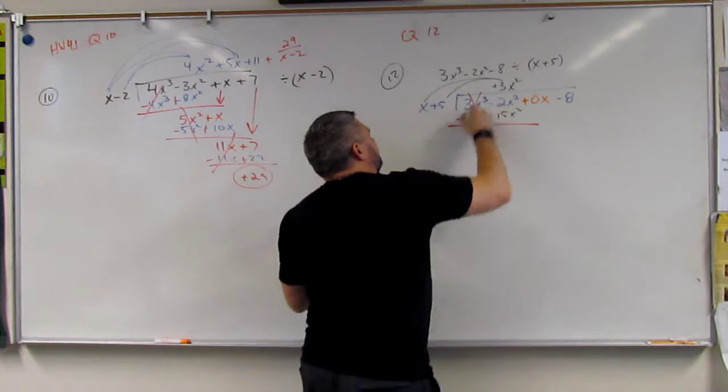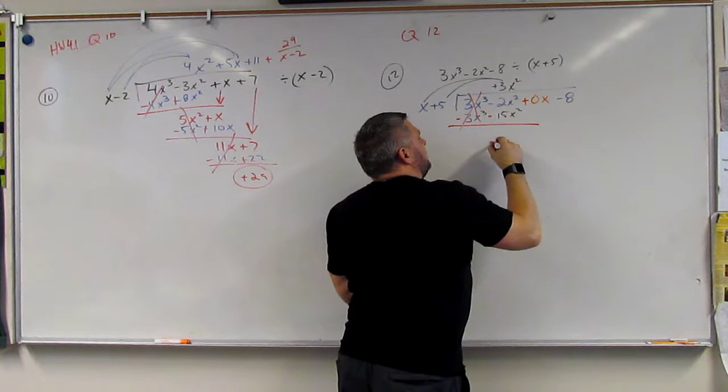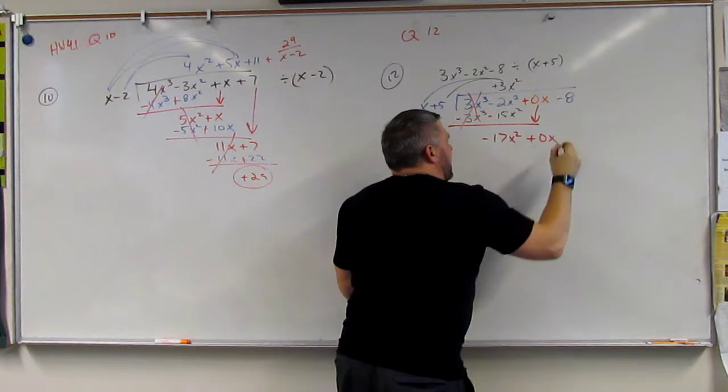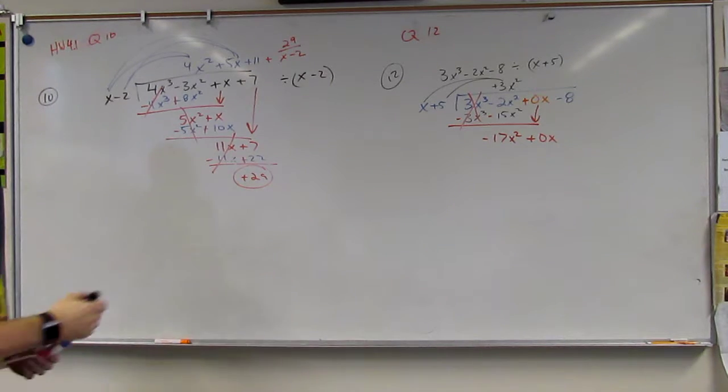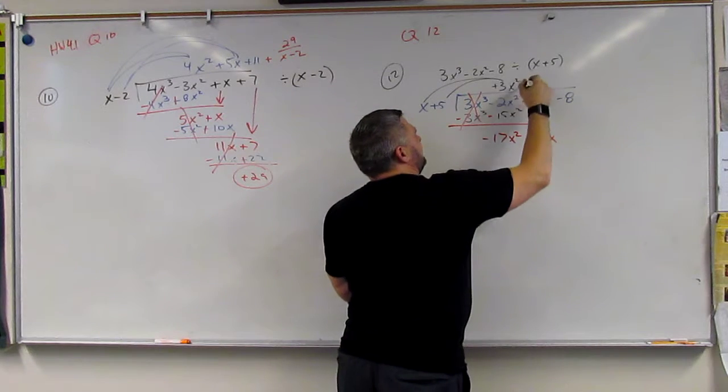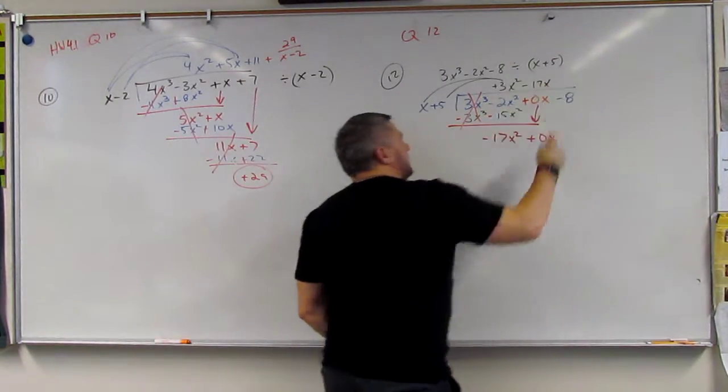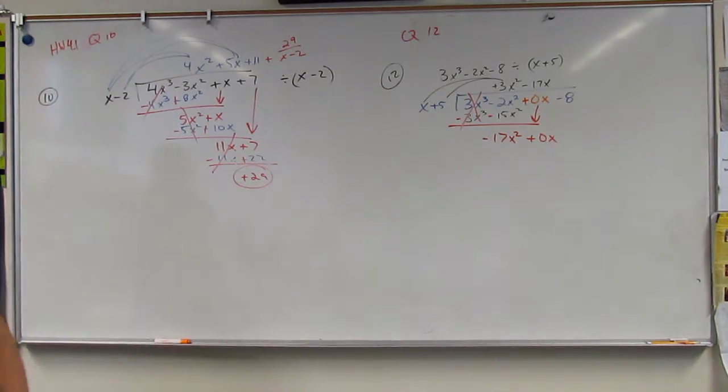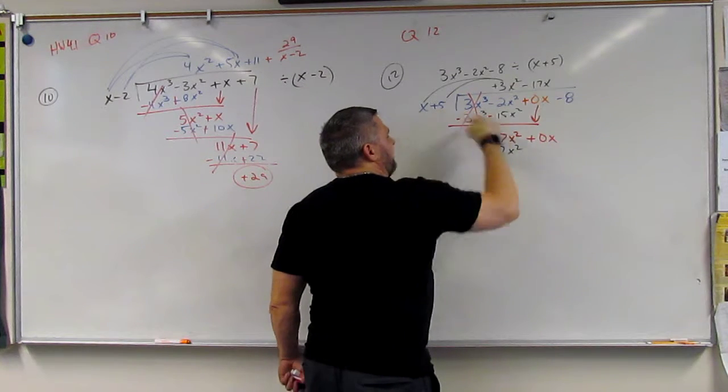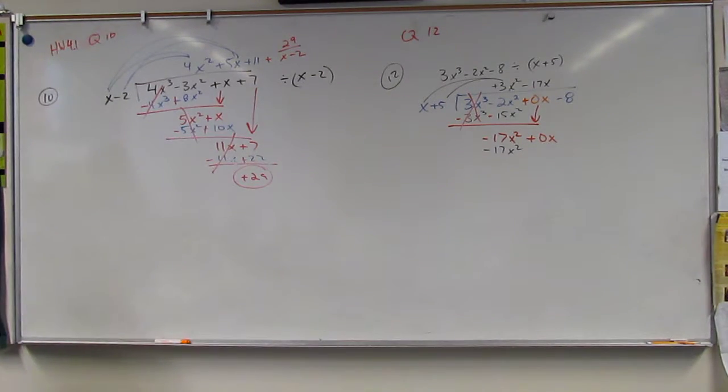So these cancel every time. And then we get negative 17x squared, and then we bring this down, plus 0x. So we say, okay, I know it's going to be in here. Well, times x is negative 17. So 1 times 1 is negative 17 is negative 17. What times x is x squared? Well, that's x. So you should get a pattern here. And so I know this is negative 17x squared. I just have to figure out this guy. And 5 times 17, that's a big number. So what is 5 times 17?